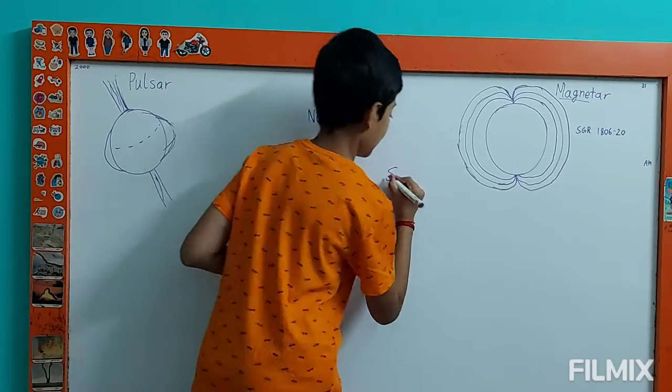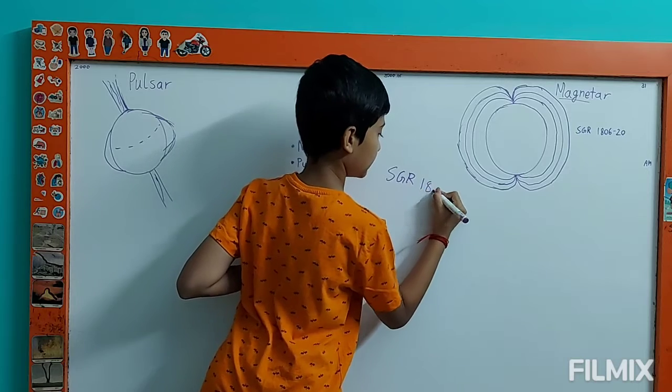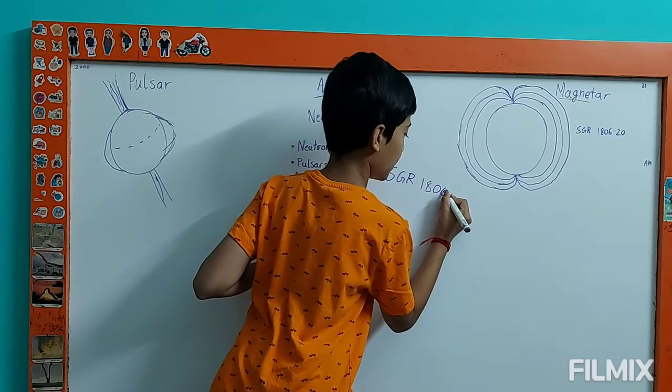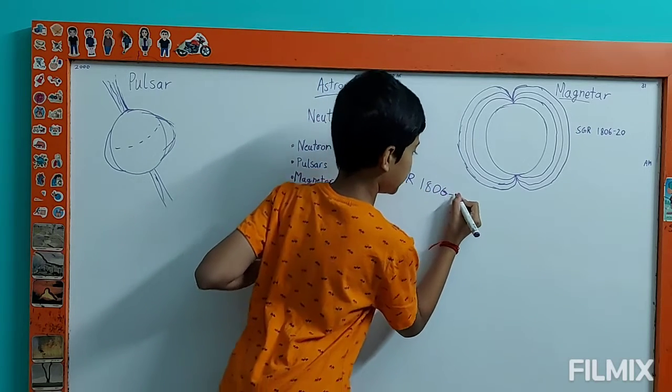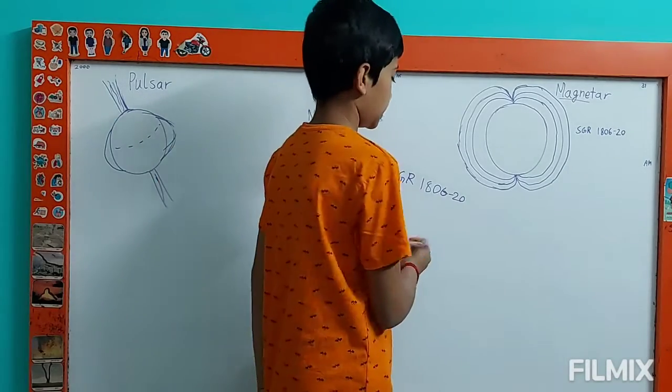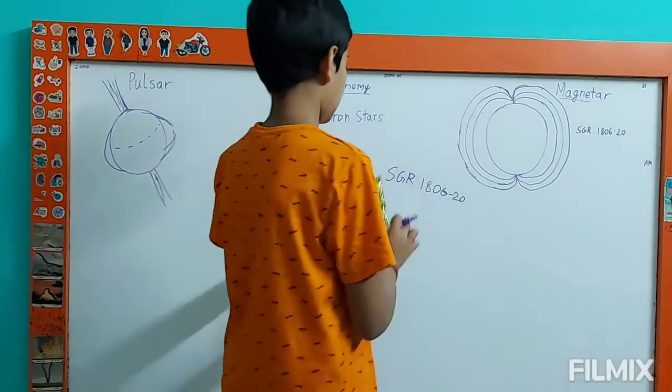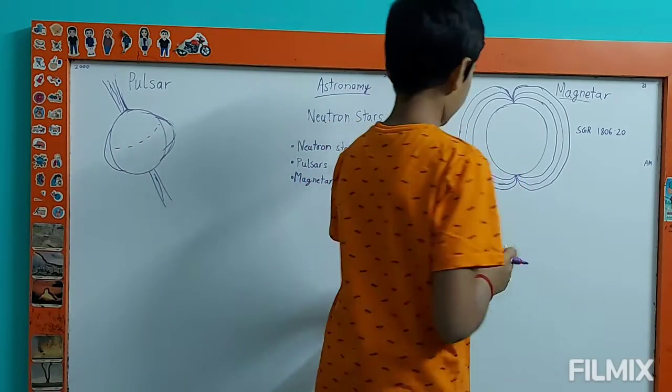Its name is SGR 1806-20. It is located in the constellation Sagittarius. It is one of the 31 known magnetars.